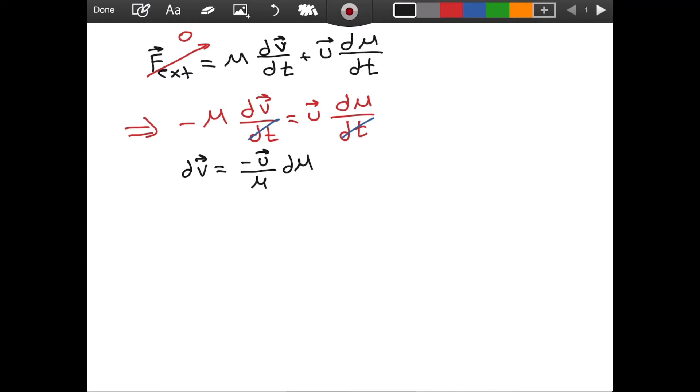Now, we have two differentials on both sides. This means we need to take an integral. Let's set our boundaries like this. Where should we start for the velocity? We should have an initial velocity, V0. And we will be interested in the final velocity after some time interval, Vf.